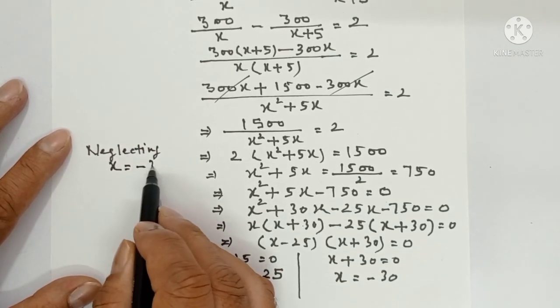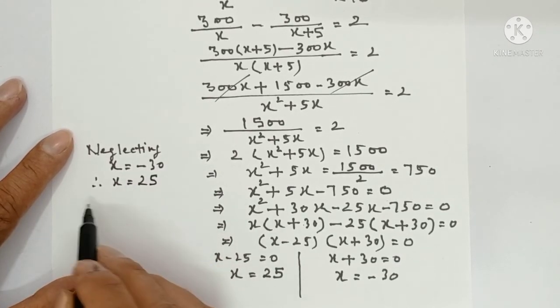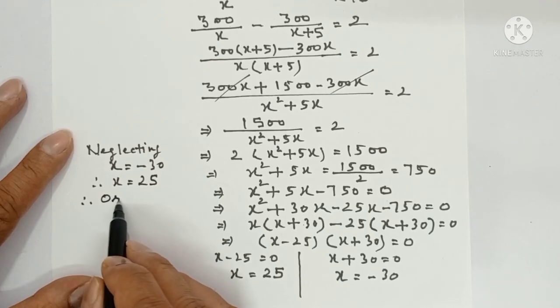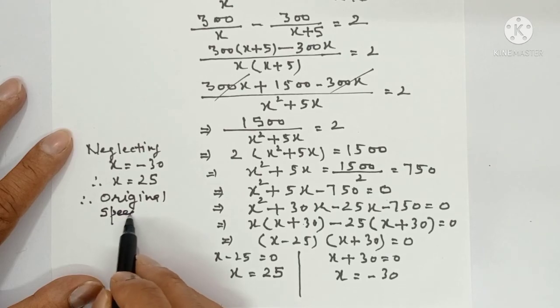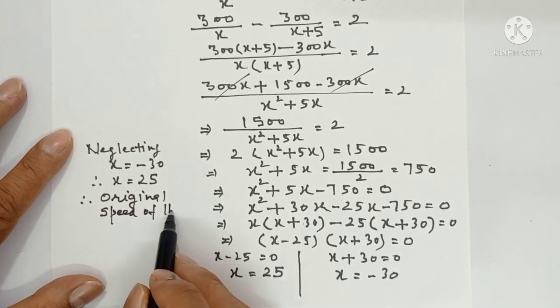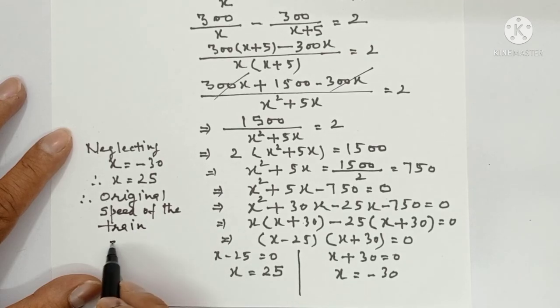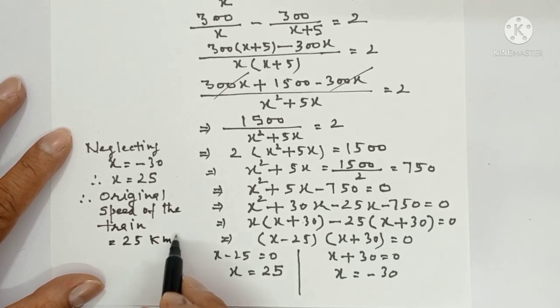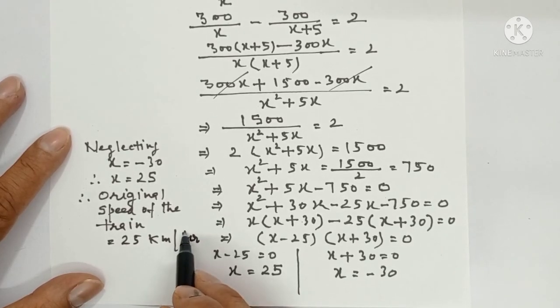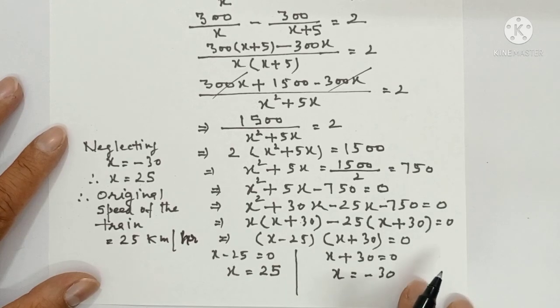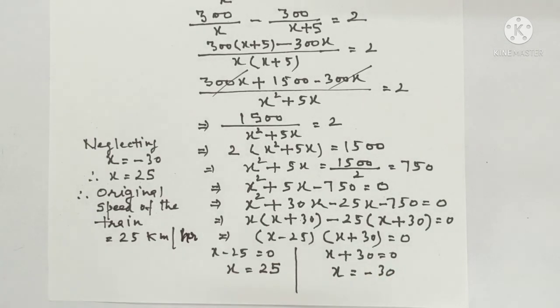What is x? Original speed of the train. Therefore original speed of the train is equal to 25 km per hour. I hope you have understood the solution of this question. Any sort of question related to speed, distance and time will be solved this way. Thank you.